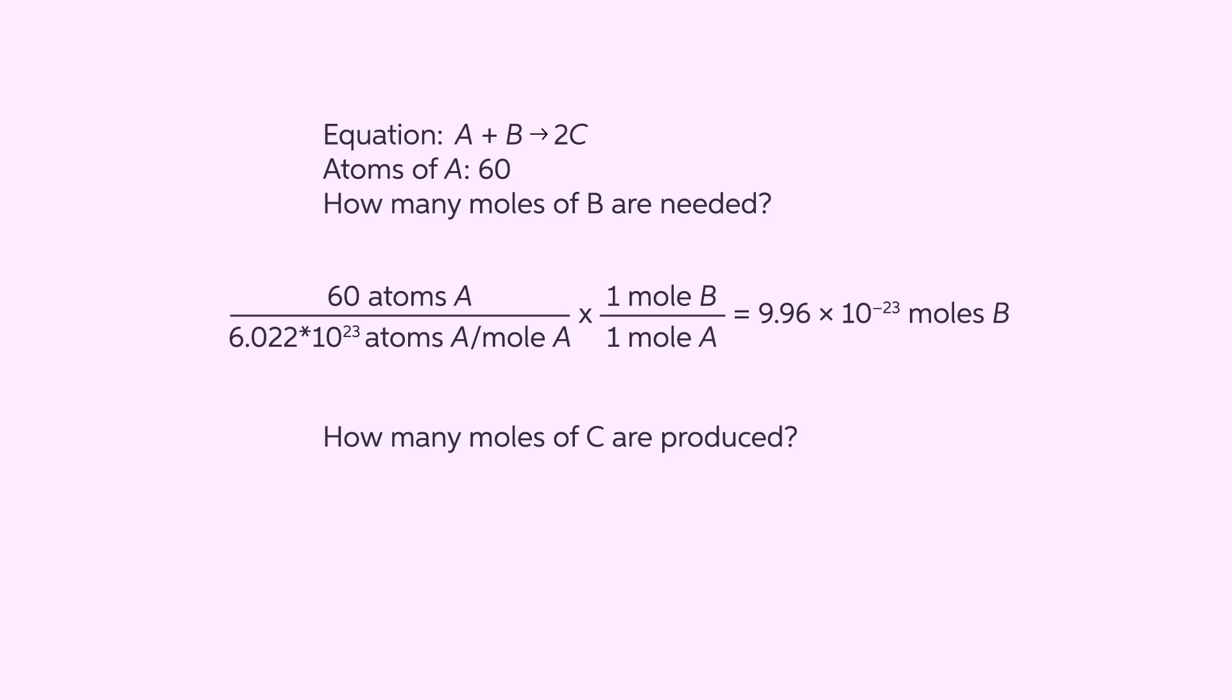The ratio of A to B in this example is one mole to one mole. The ratio of C to A is two moles for every one mole of A. So we'll multiply by that two to one ratio to get the correct number of moles of C produced.